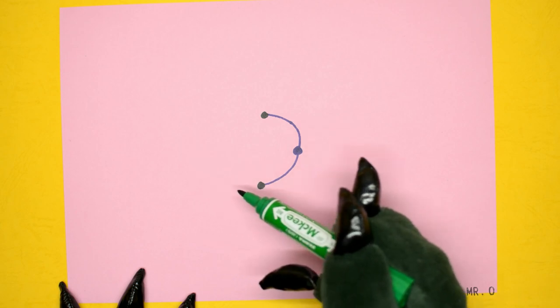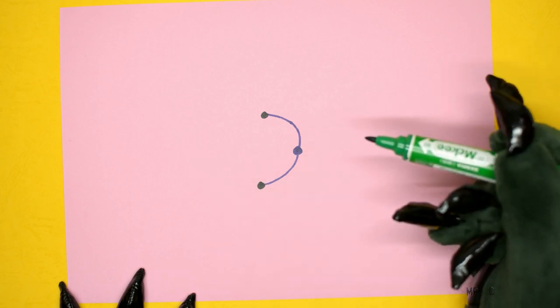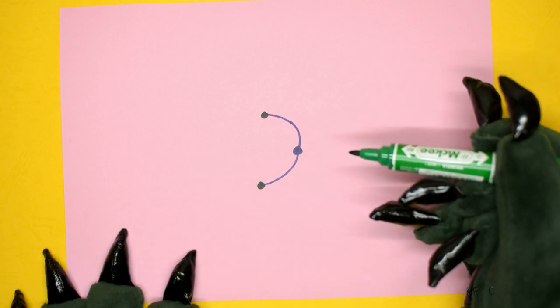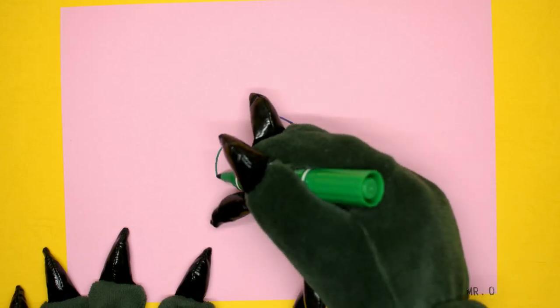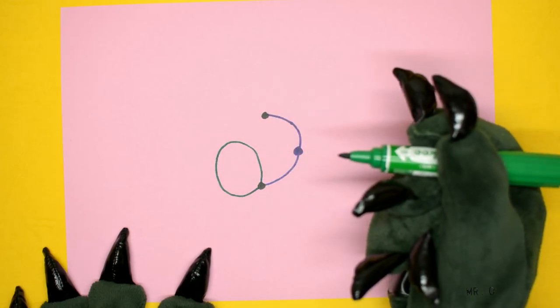The second player does the same, drawing from one spot to another. Or they can even draw from one spot to itself. Let's do that.